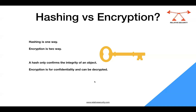So hashing is one-way — you can only calculate the hash from the data. Encryption is two-way — you can convert plain text into cipher text and convert cipher text back to plain text. The hash only confirms the integrity of an object, while encryption is for confidentiality and can be decrypted back to the original plain text. I hope this clarifies what hashing and encryption are, and you should be able to answer the question easily.